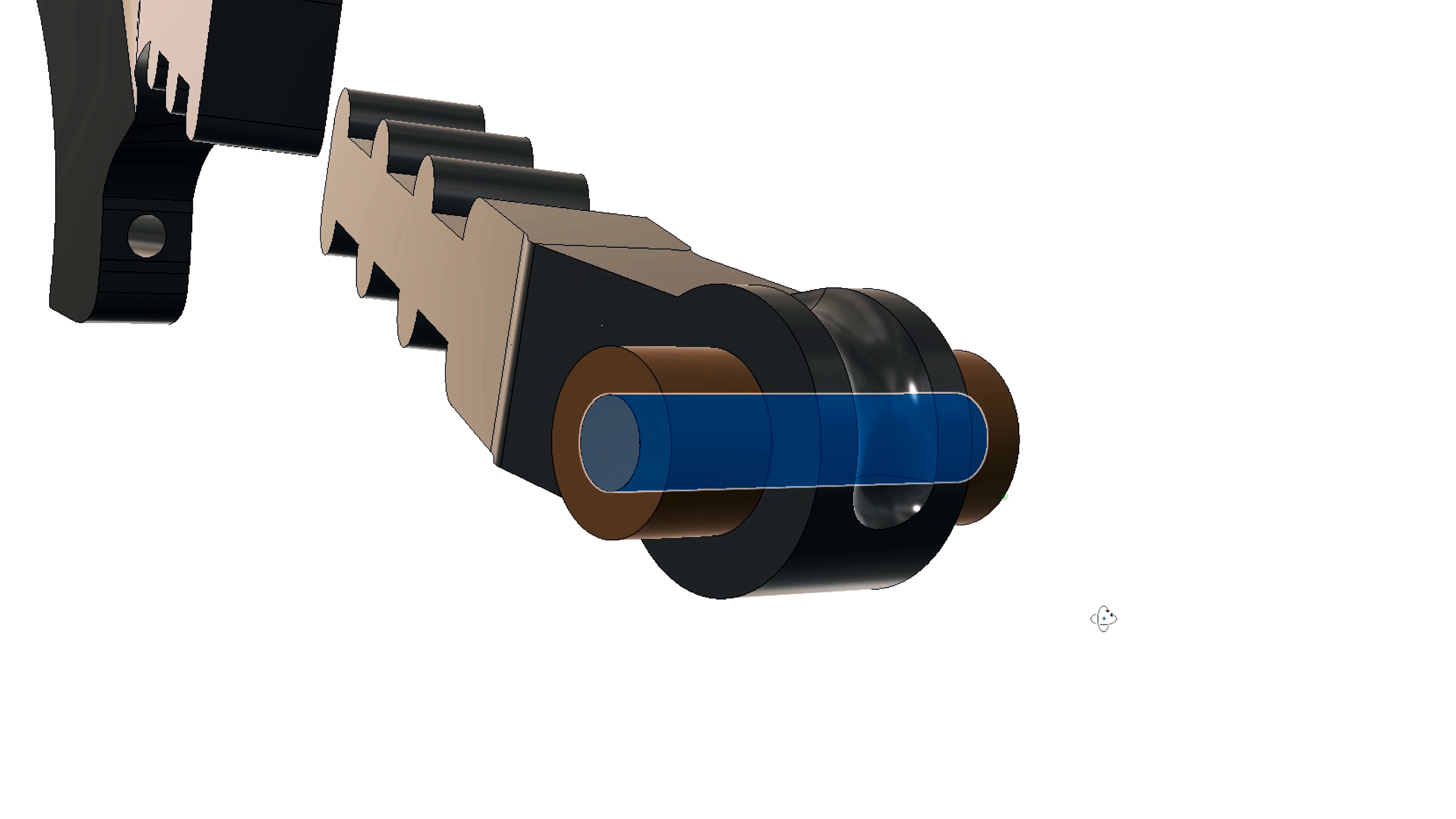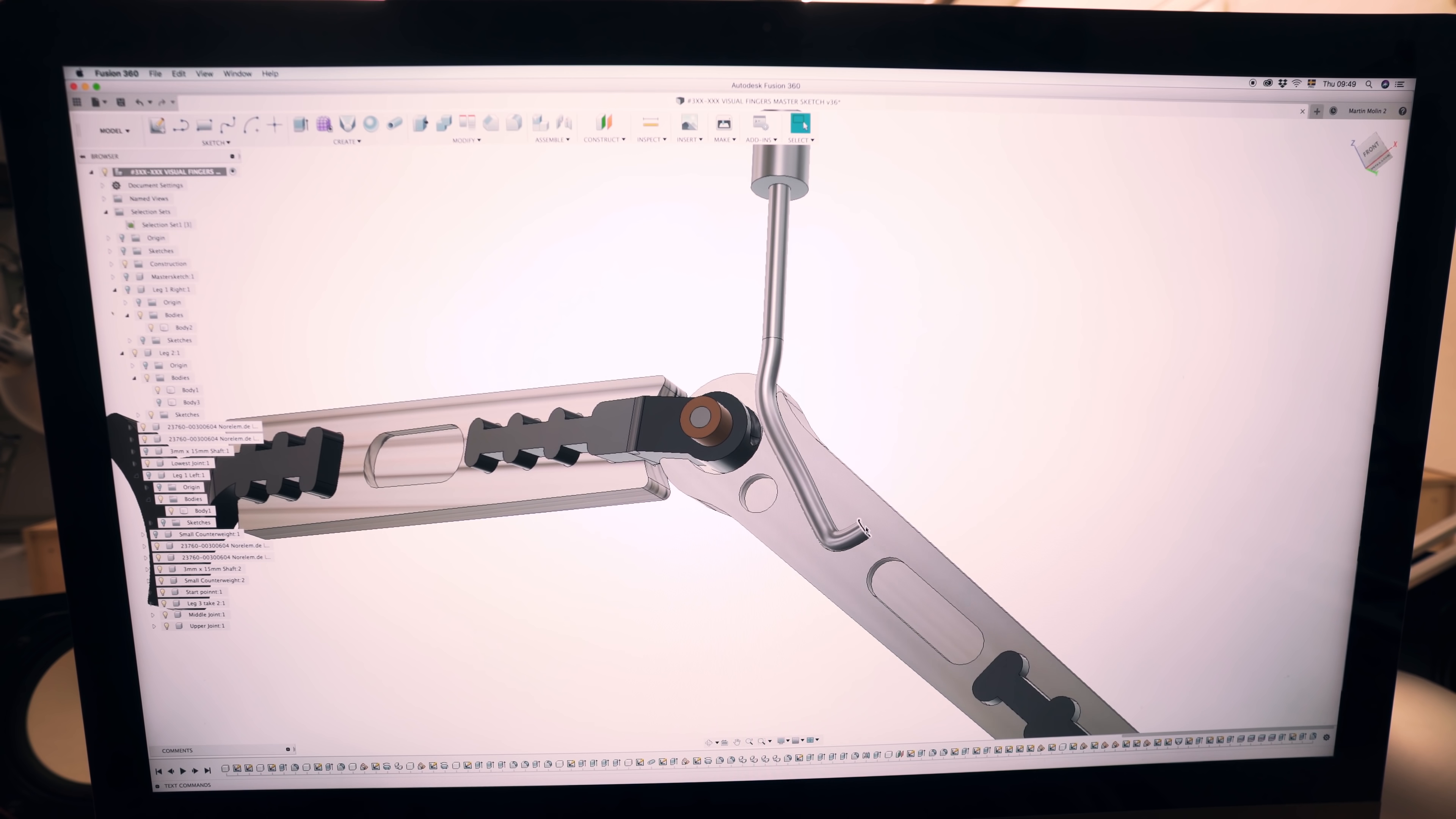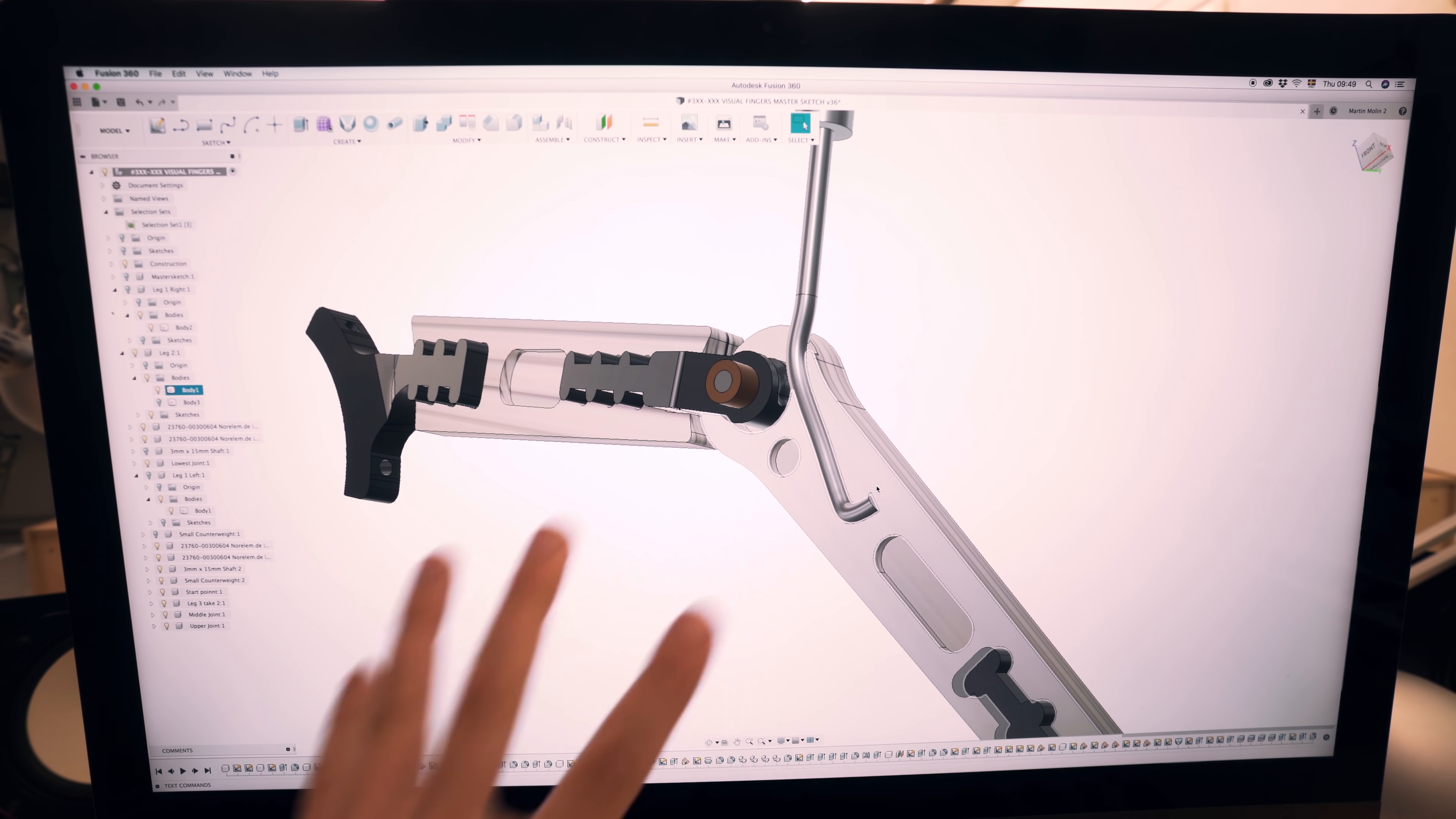And then we have bronze bushings. These are super small, it's four millimeter long bronze bushings that are press fit into the plywood. Also this counterweight is held in place by the gluing together of the two plywood sides.